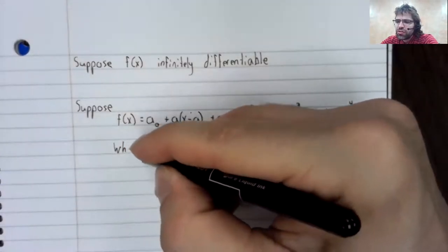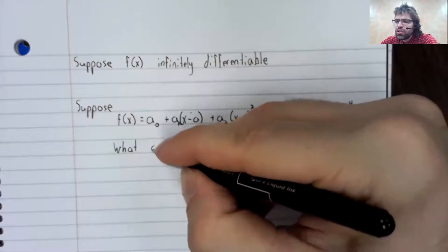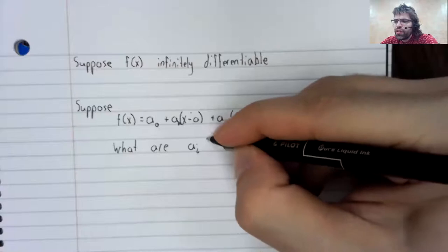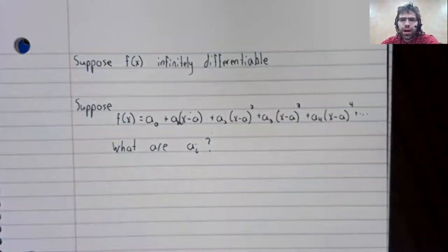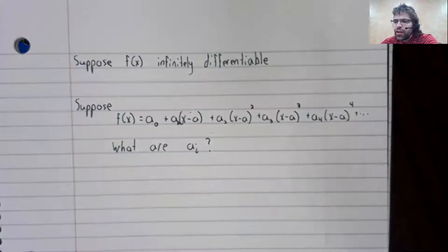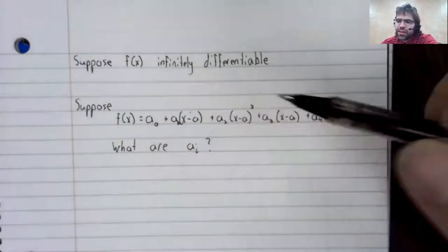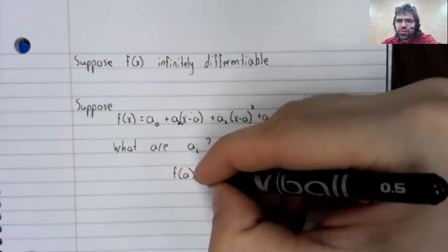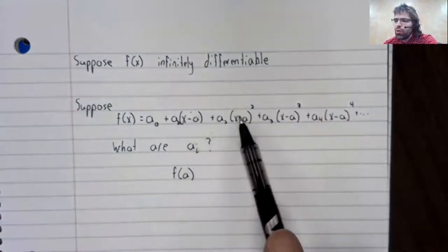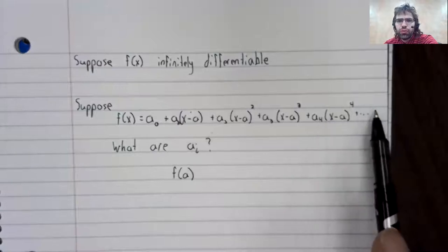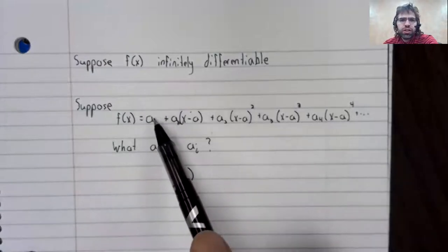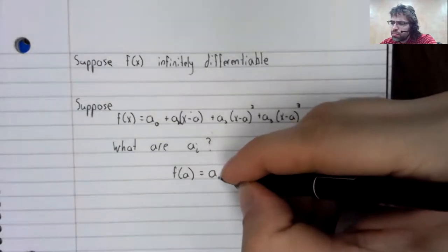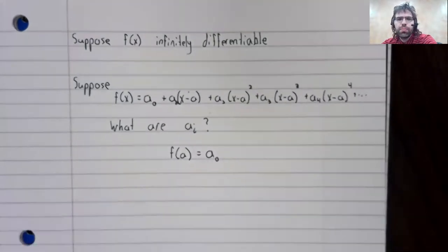Let's ask the question. What are these coefficients a sub i? And the first of these we're going to find easily. If we stick a into this series, all of these become zero. And the only term that remains is a sub zero.